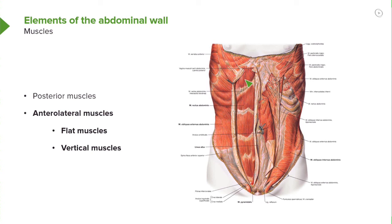We also have vertically oriented musculature. This is your rectus abdominis. These areas here represent your tendinous intersections. The linea semilunaris is the lateral margin of the rectus, represented here. And your linea alba is represented down the midline through the umbilical region.